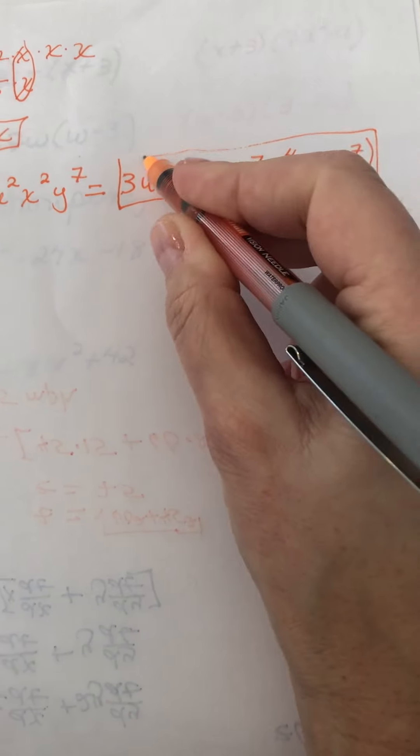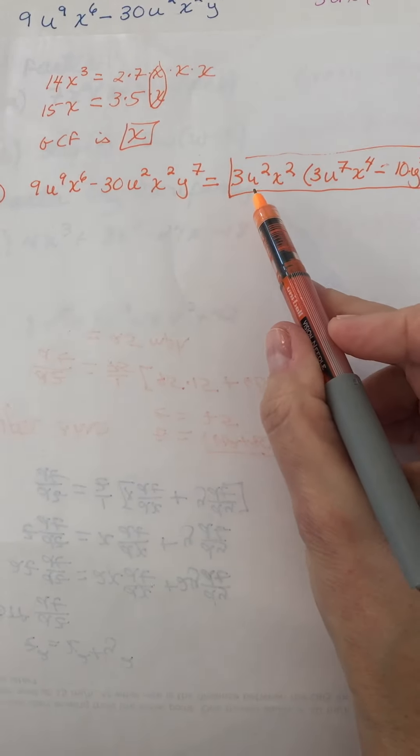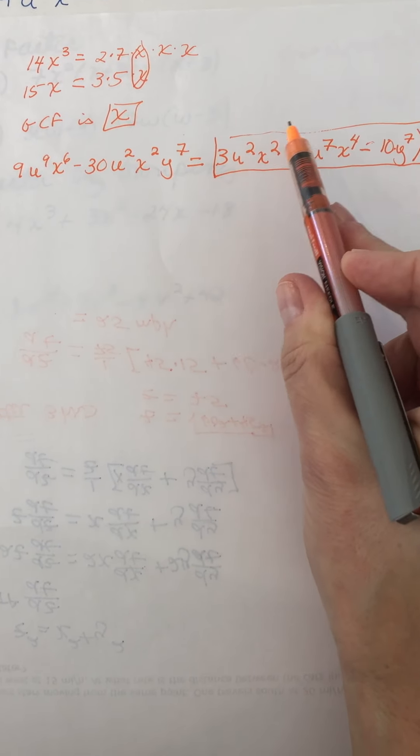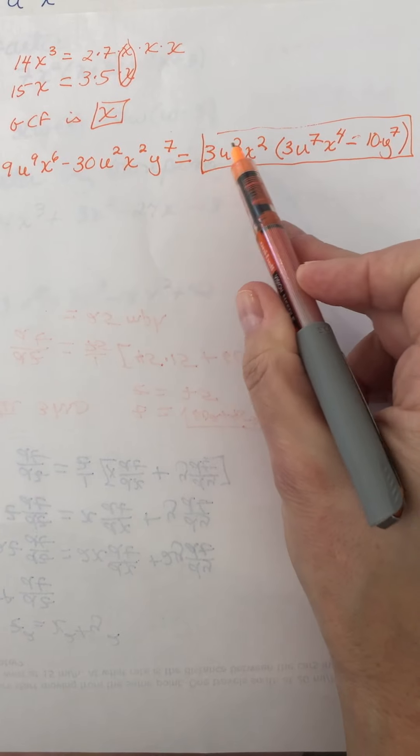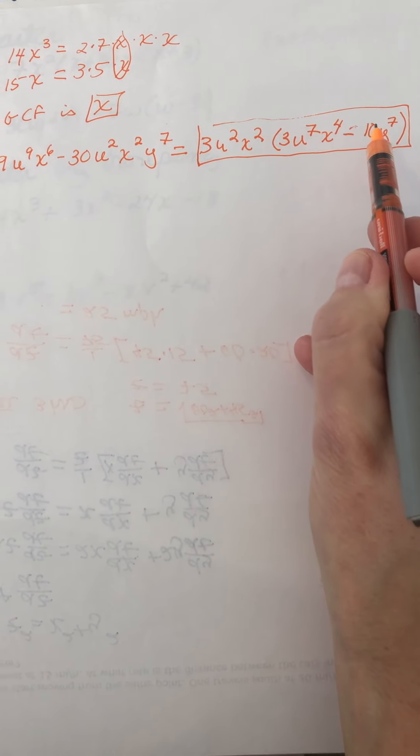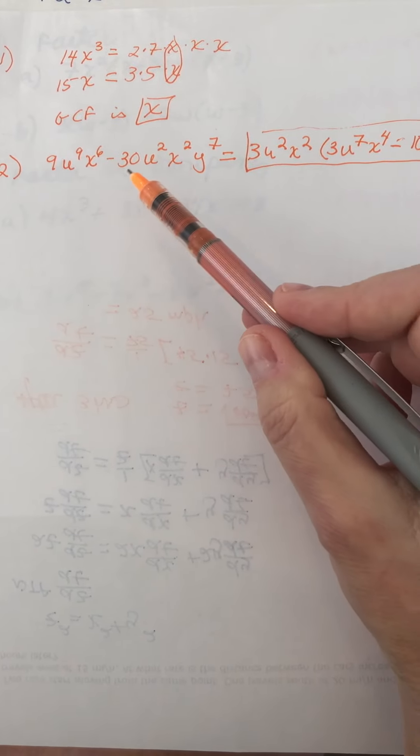Okay, so again you could check that this works by multiplying. You multiply this times the first term and you multiply this whole factor times the second term, and you would get that.